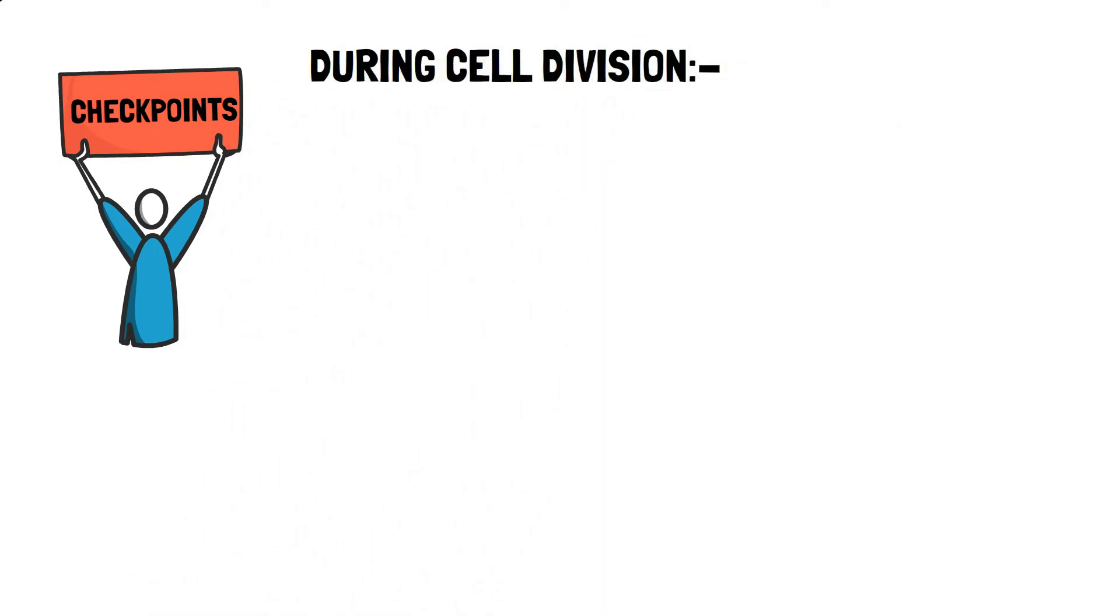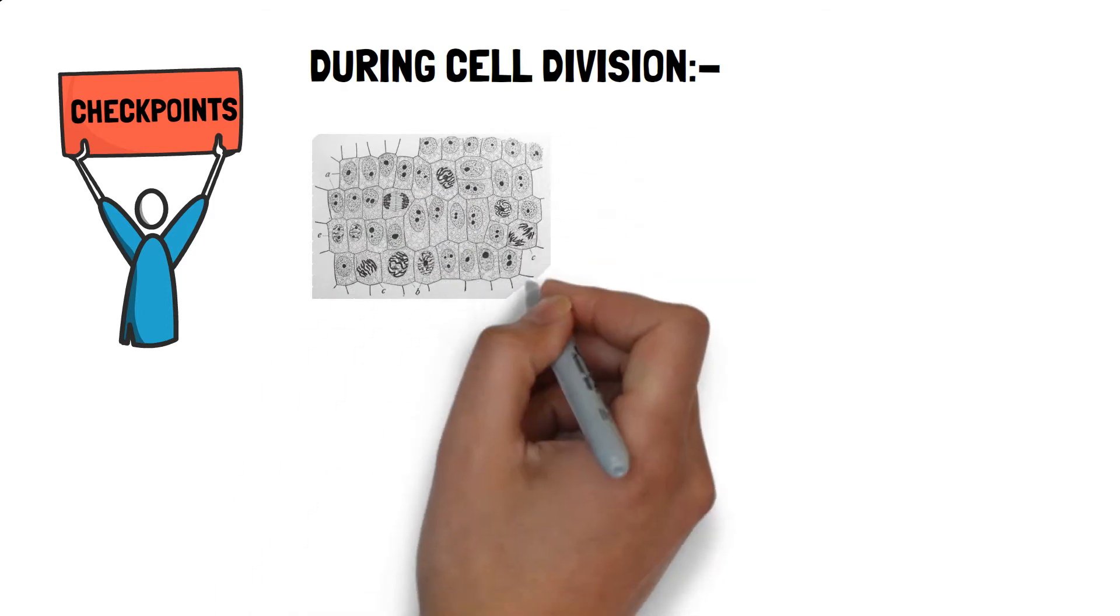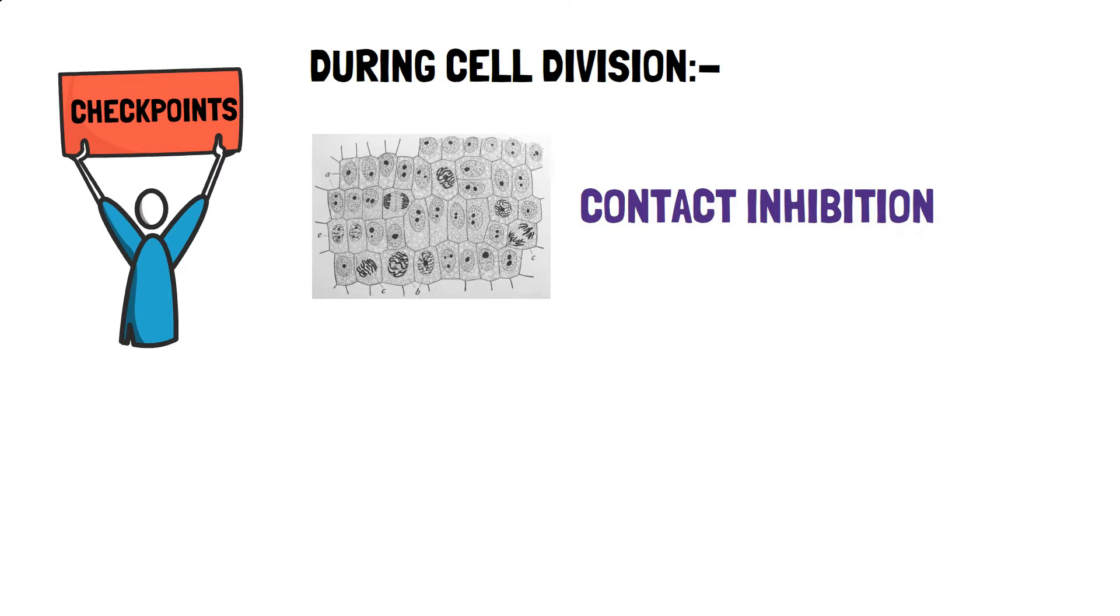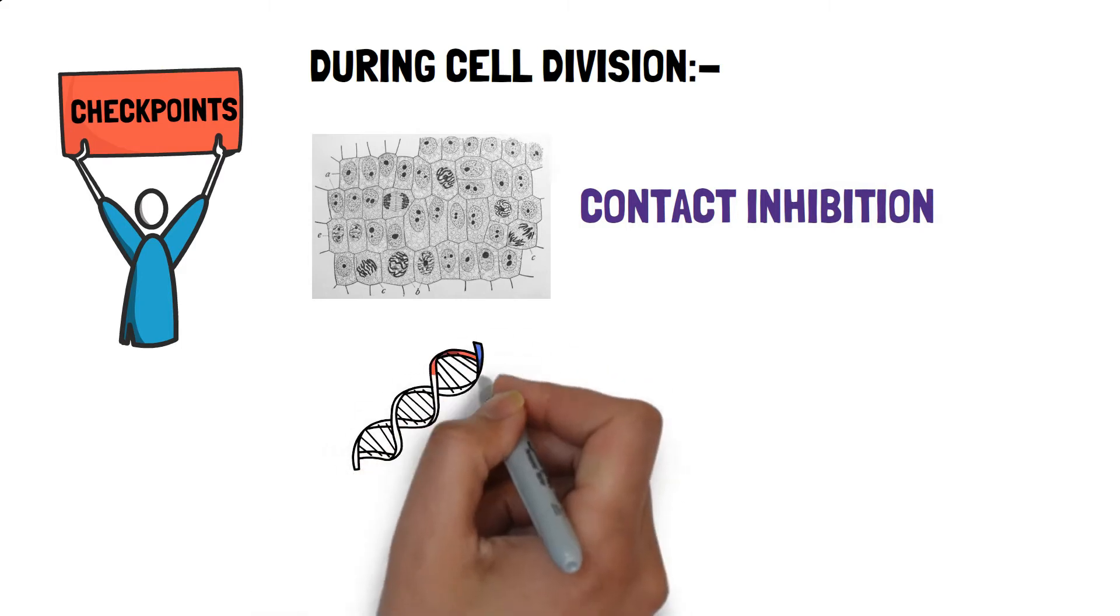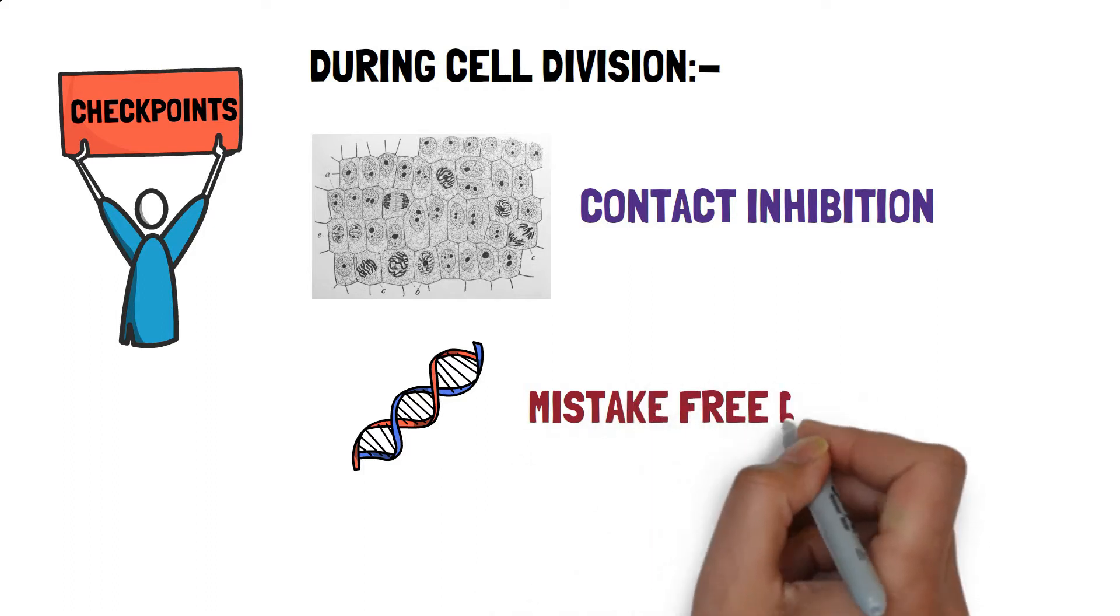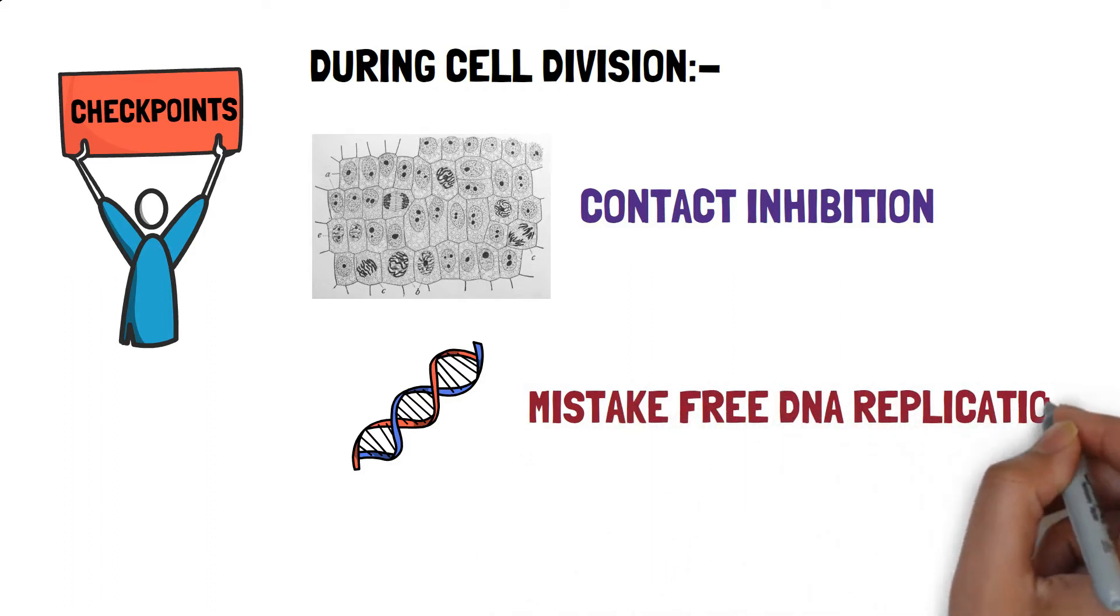And these checkpoints are firstly it is contact inhibition. Next is mistake free DNA replication where DNA replication does not incur major mistakes that leads to mutation.